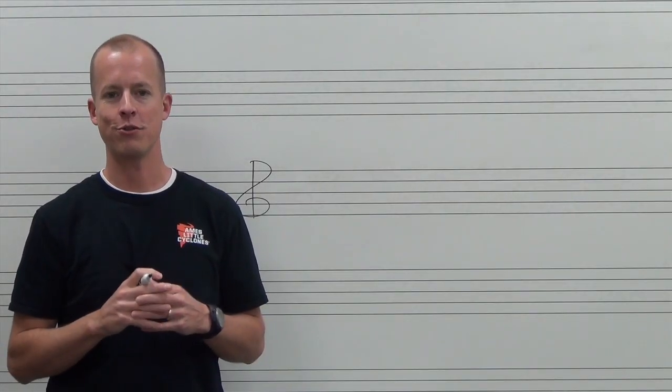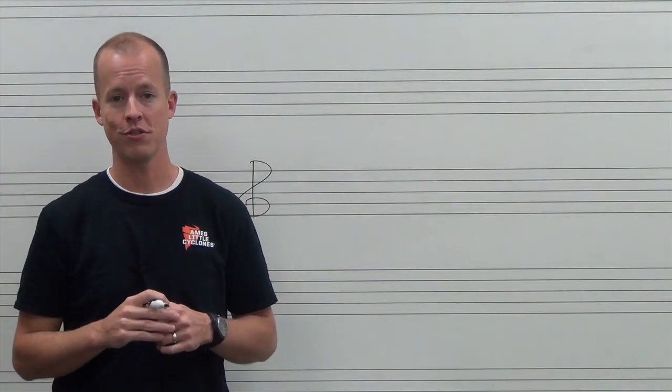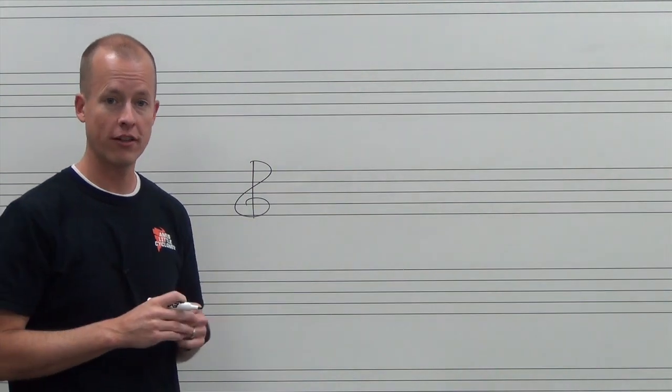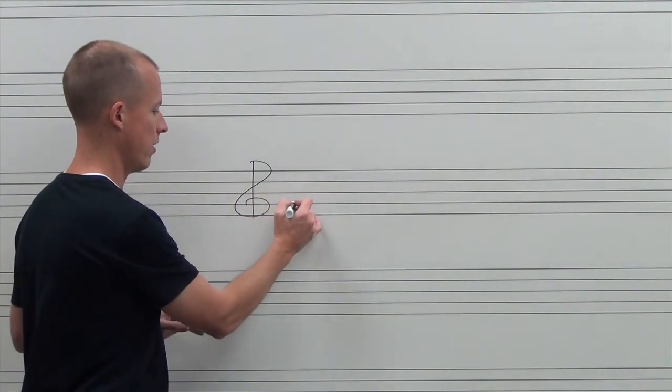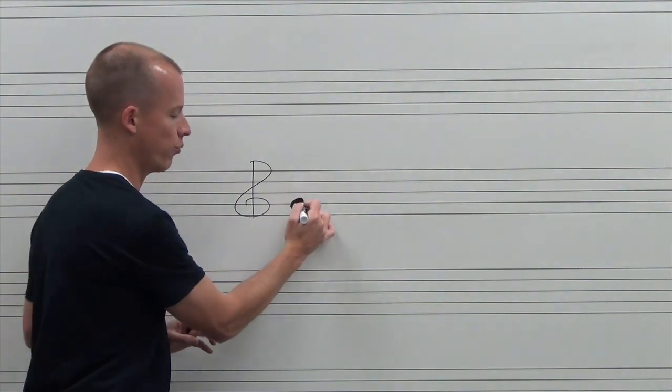All right, this is part two of how to read notes on the musical staff for G clef. We establish this as the G clef because it wraps around this second line and it shows us where G is.